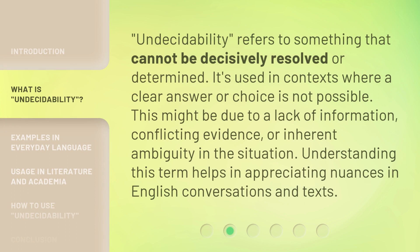Undecidability refers to something that cannot be decisively resolved or determined. It's used in contexts where a clear answer or choice is not possible. This might be due to a lack of information, conflicting evidence, or inherent ambiguity in the situation. Understanding this term helps in appreciating nuances in English conversations and texts.